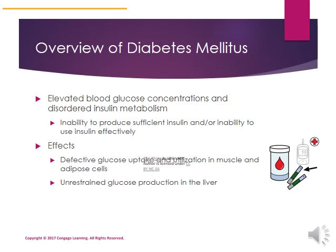Poorly controlled and uncontrolled diabetes is detrimental to the human body. Diabetes mellitus describes a set of conditions in which the body experiences elevated blood glucose concentrations as well as disordered insulin metabolism. Elevated blood glucose concentrations are referred to as hyperglycemia, and they result from either the body's inability to produce enough insulin, the inability of cells to use insulin effectively, or a combination of both.